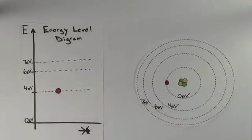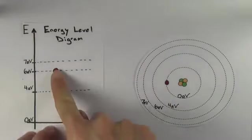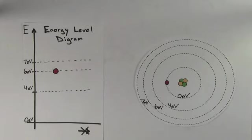If the electron's at the second energy level, also called the first excited state, the electron could absorb a 2 eV photon or a 3 eV photon. And if the electron were at the third energy level, or the second excited state, the electron could absorb a 1 eV photon.